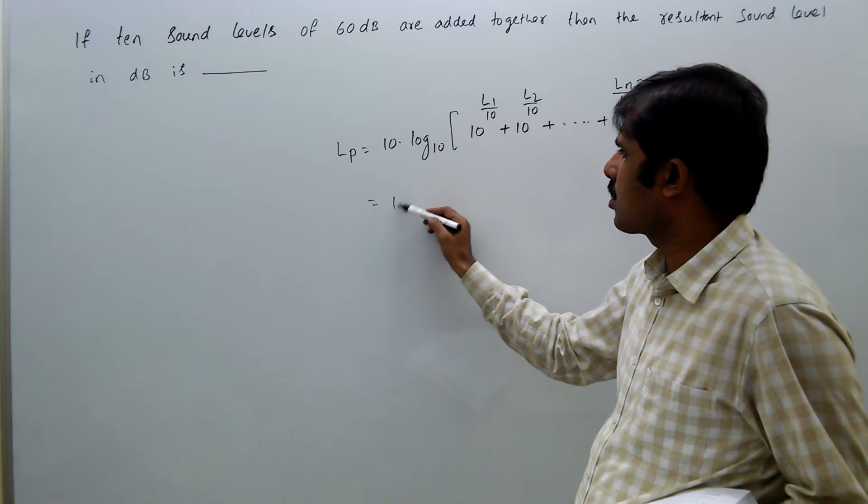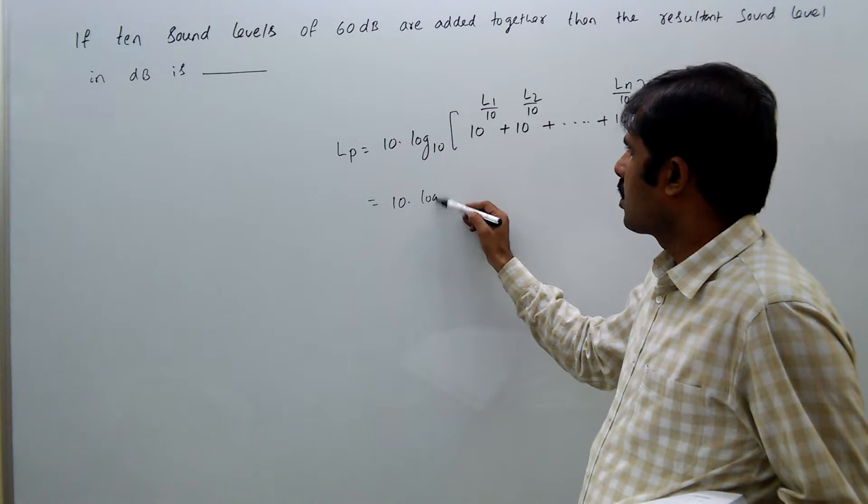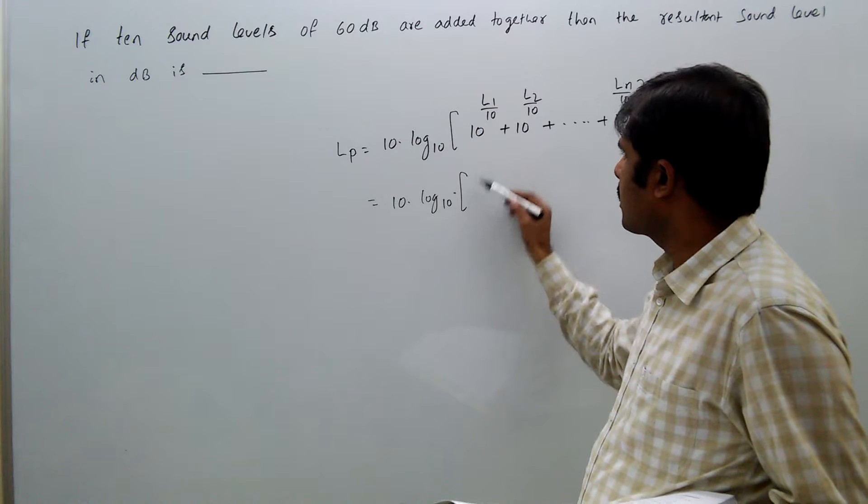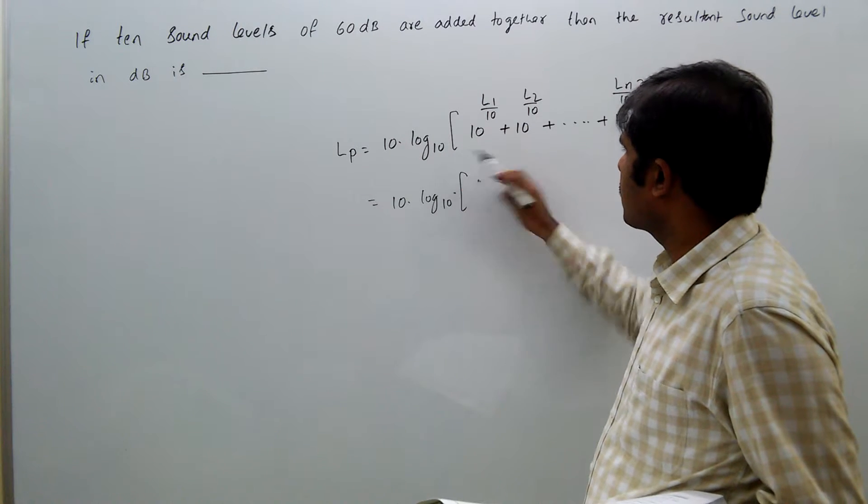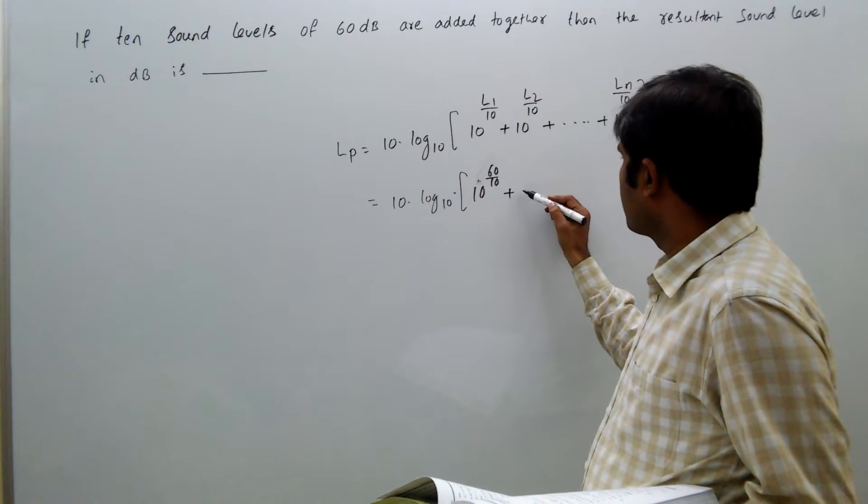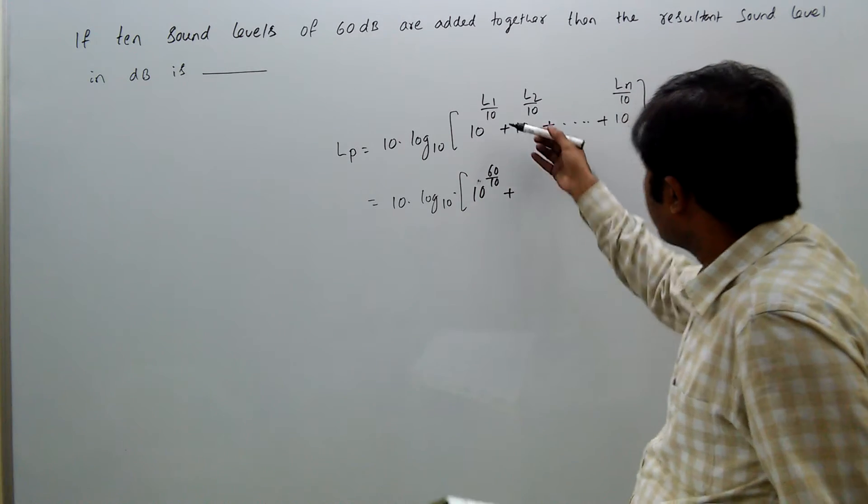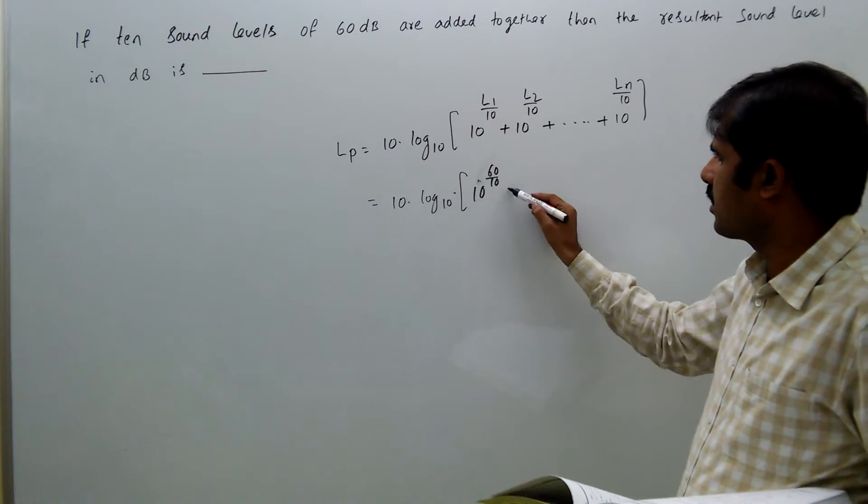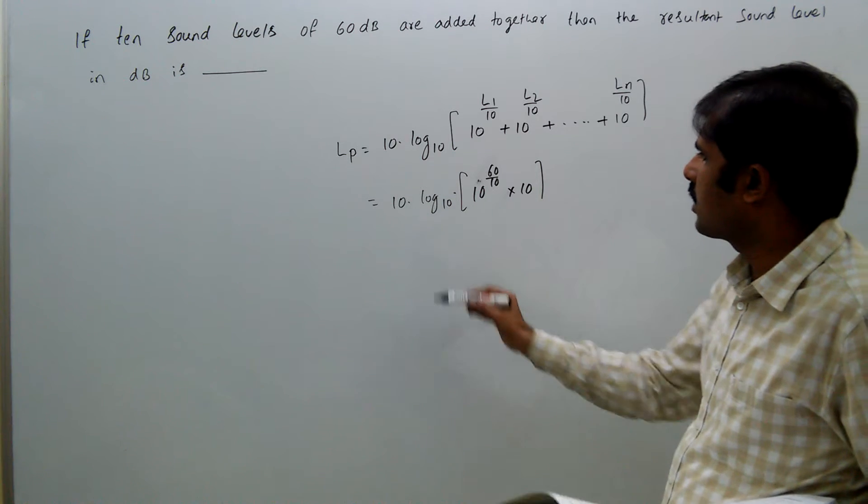But all are here 60 decibels, so 10 log base 10 of (10^(60/10) + 10^(60/10)... 10 times), which equals 10^6 times 10.